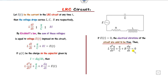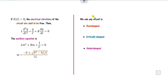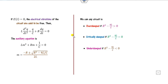The general solution is written as Q = Qc + Qp, the complementary plus particular solution. For the complementary solution, write the auxiliary equation with constant coefficients. The value of m is found from the discriminant R² − 4L/C. If it is greater than zero, the circuit is over-damped; equal to zero, critically damped; and less than zero, under-damped.